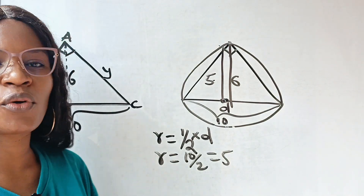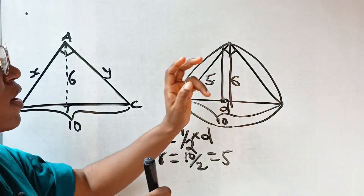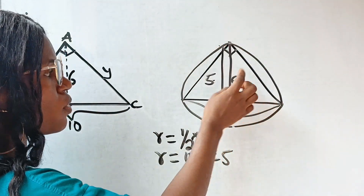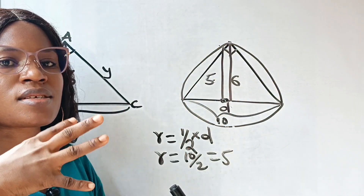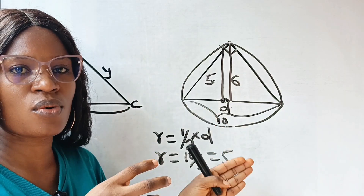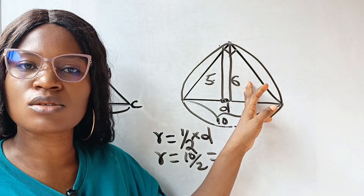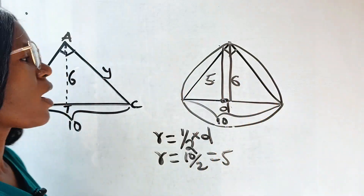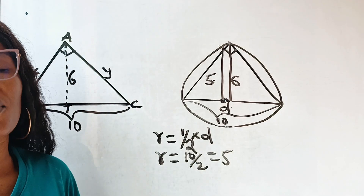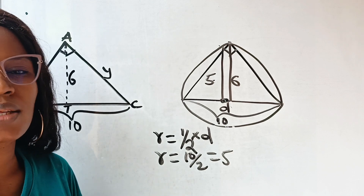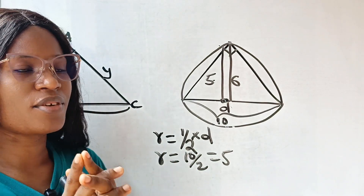Our radius is 5 units, but notice that the height of the triangle is 6. For the triangle to be inscribed inside the circle, the height cannot exceed the radius — but 6 is greater than 5. This violates the theorem, so the triangle does not exist and an area of 30 square units is not possible. That is how we have proved that this area cannot be 30.